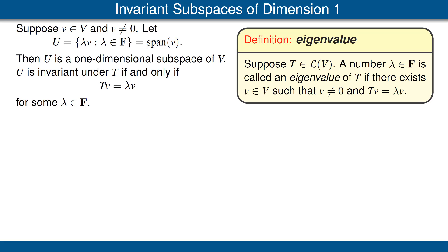We now have good motivation for our next definition, which is one of the most important definitions in linear algebra. Suppose T is a linear map from V to V. A scalar lambda is called an eigenvalue of T if there exists a non-zero vector v such that T(v) equals lambda times v. The first time you hear this word eigenvalue it may seem strange because the word is half German, half English, but you should get accustomed to hearing it frequently.